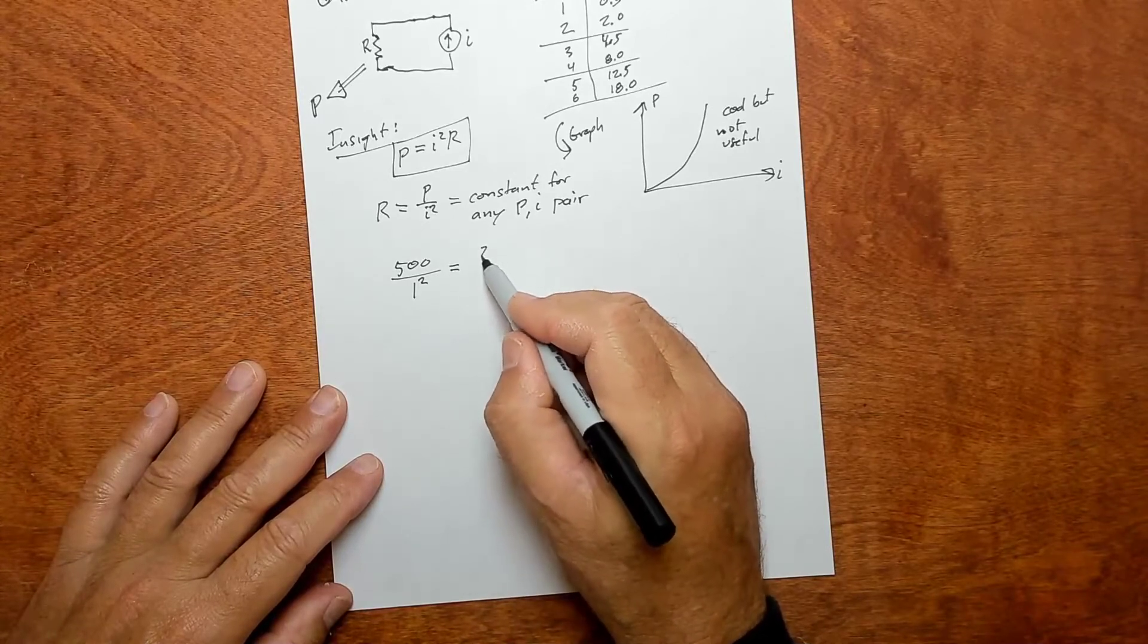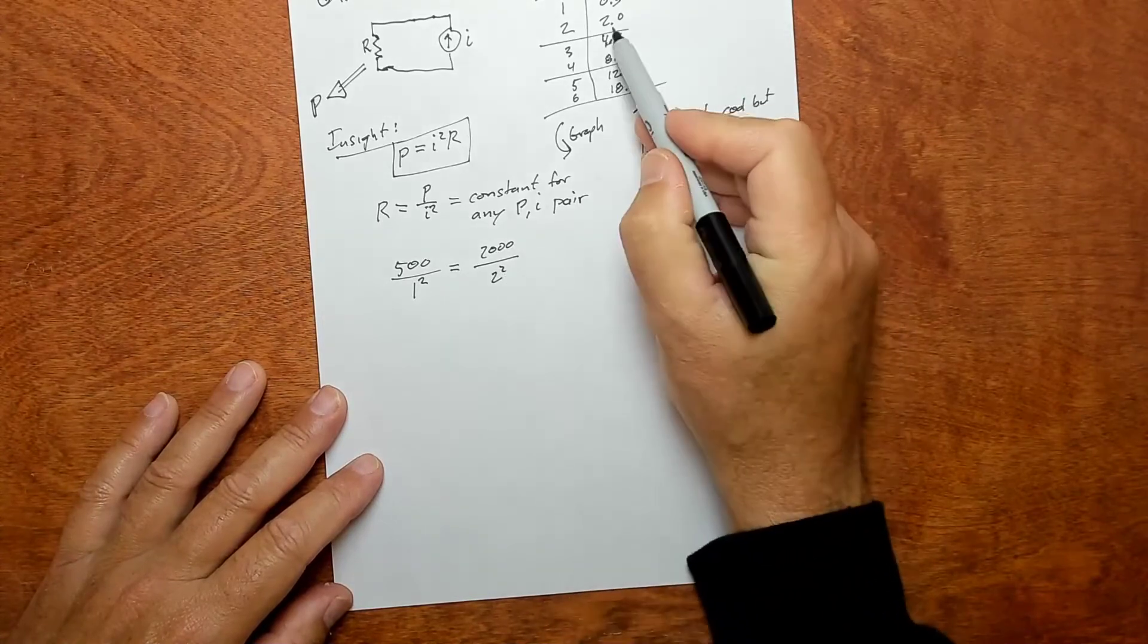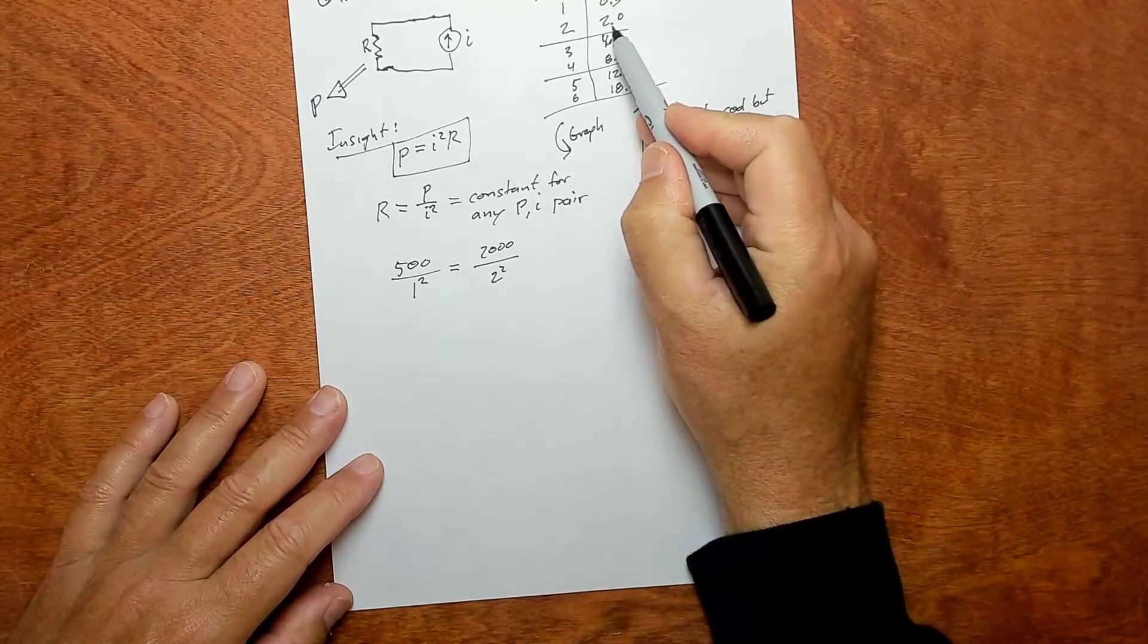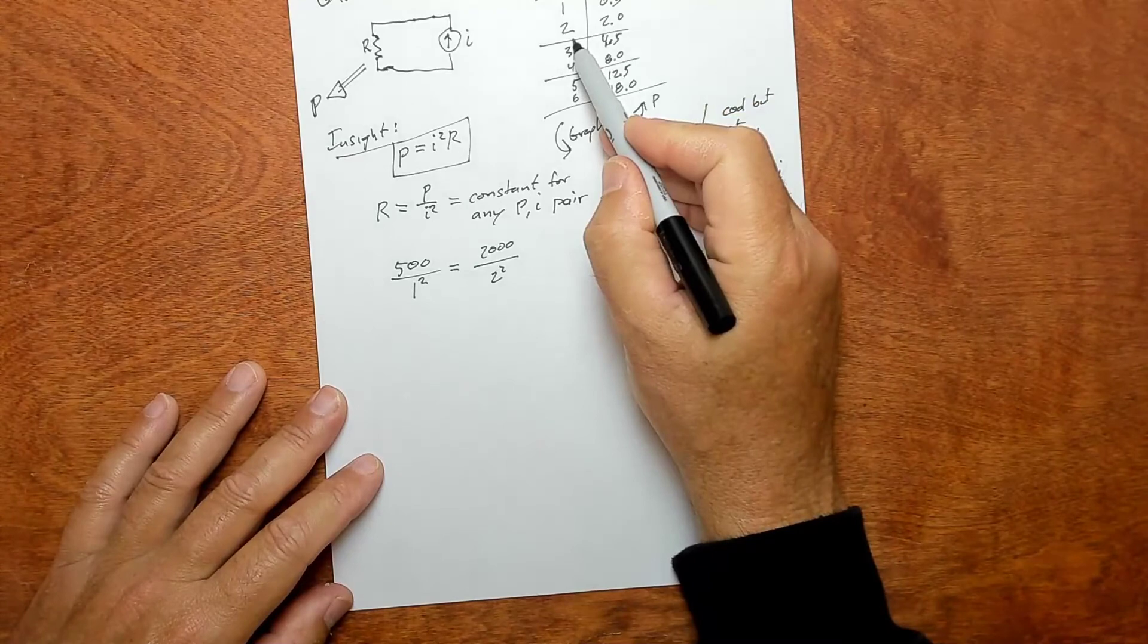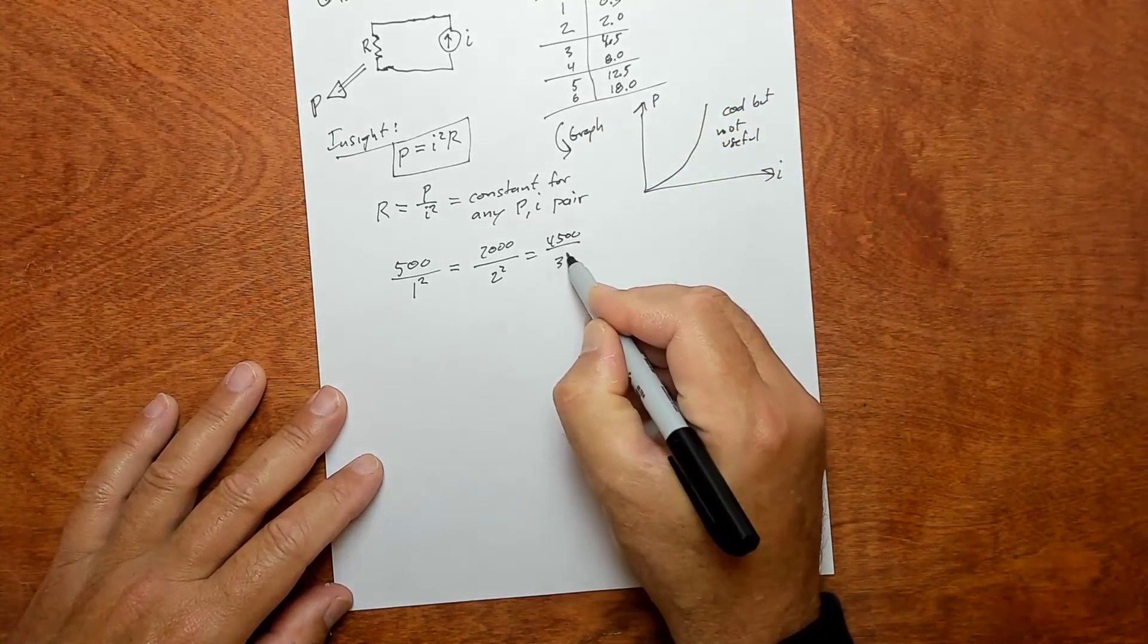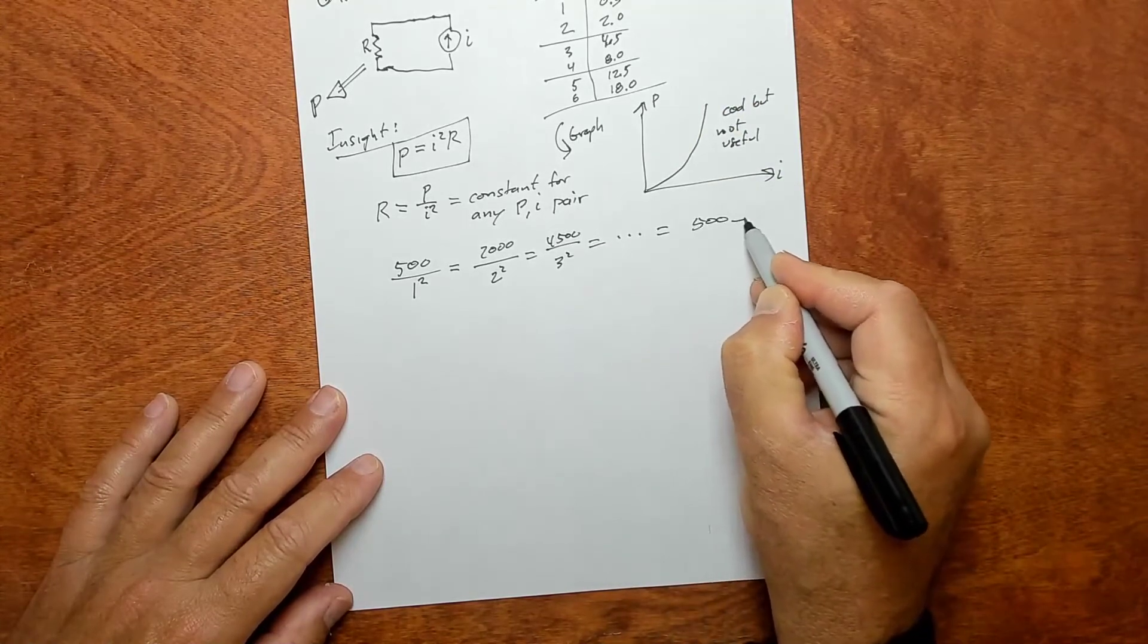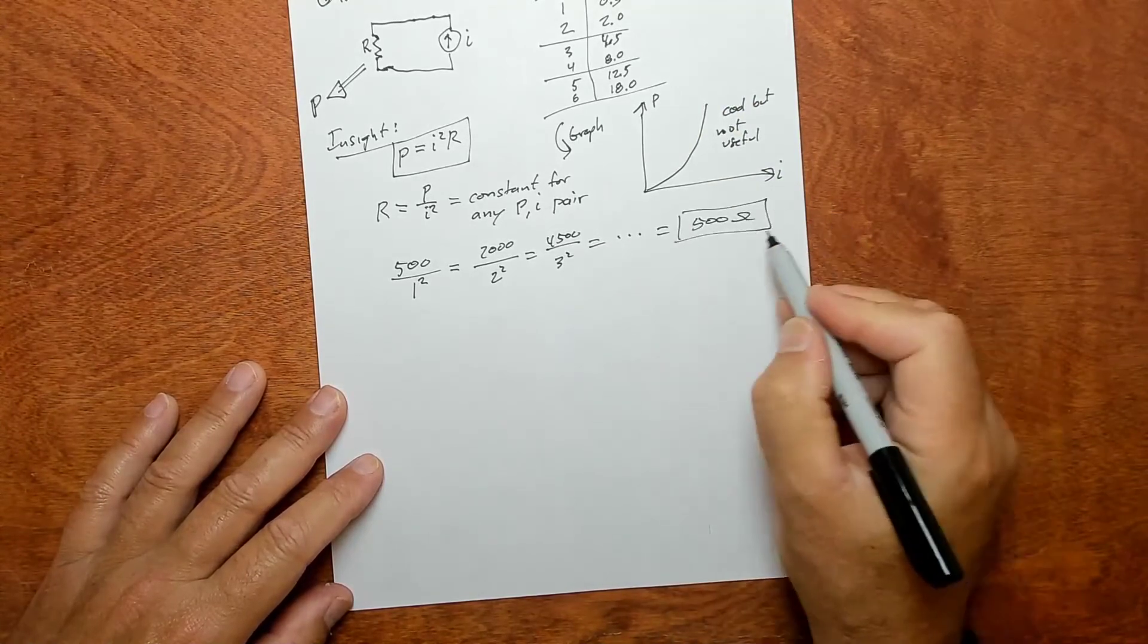Otherwise you'll be way off. So this is 500, which happens to be the same as the next pair. The 2,000 watts over 2 squared is also 500. And the 4,500 watts over 3 squared, all of these are 500, 500 ohms. That's the answer - we're trying to find R.